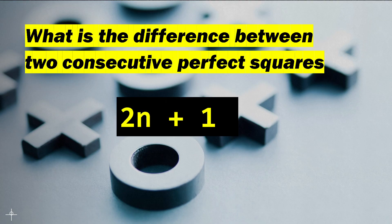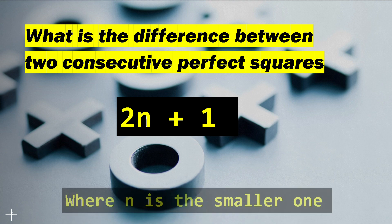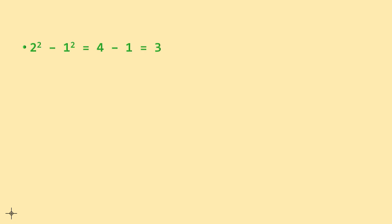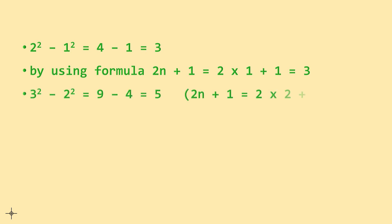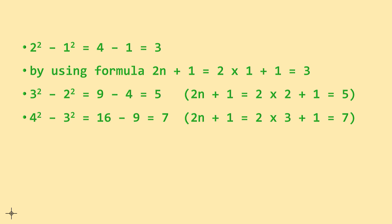Now let's discuss the difference between two consecutive perfect square numbers. Since there are 2n non-square numbers between them, the difference between two consecutive perfect squares is 2n + 1, where n is the smaller number. For example, 2² − 1² = 4 − 1 = 3, and using the formula: 2(1) + 1 = 3. Similarly, 3² − 2² = 5, and 2(2) + 1 = 5. So the difference between 51² and 50² is 2(50) + 1 = 101.